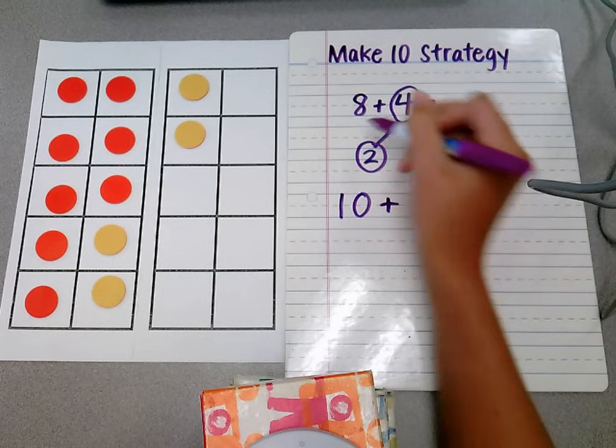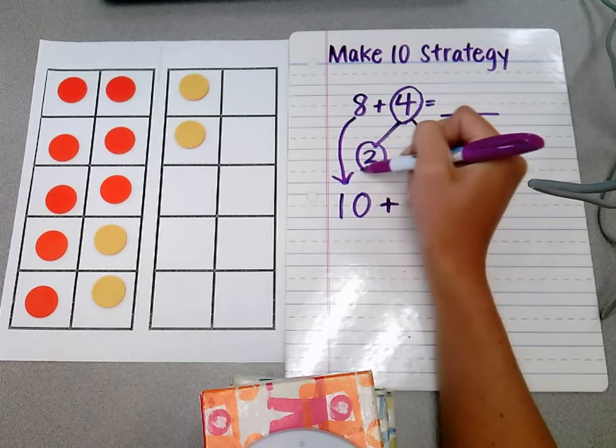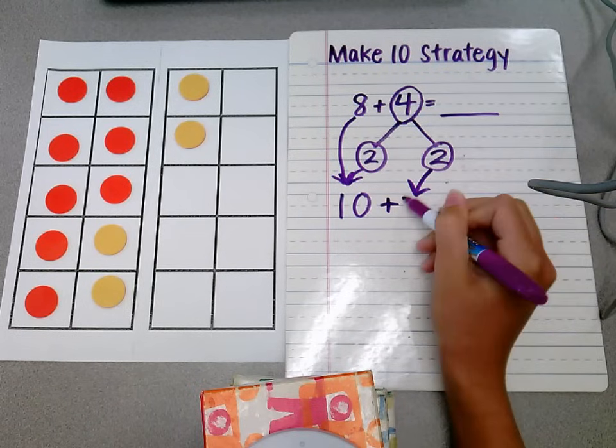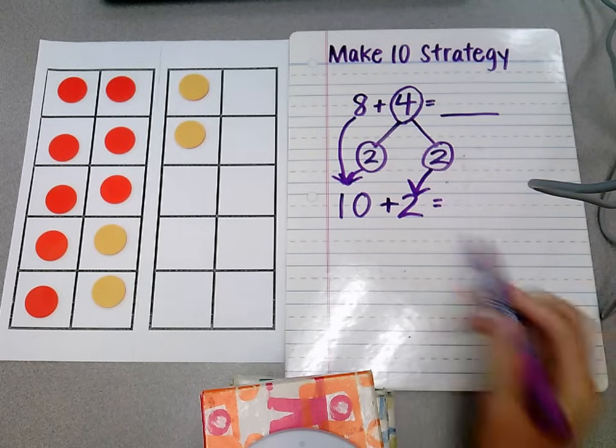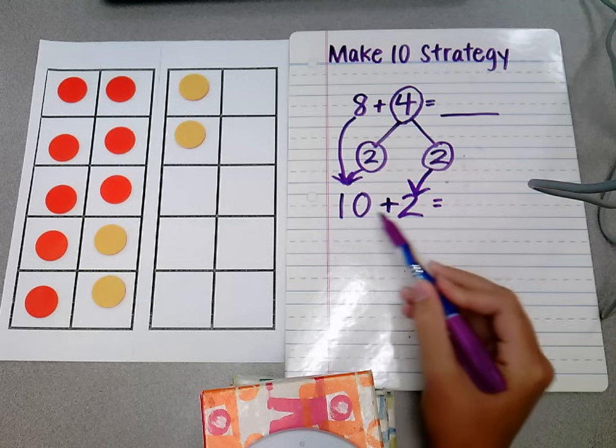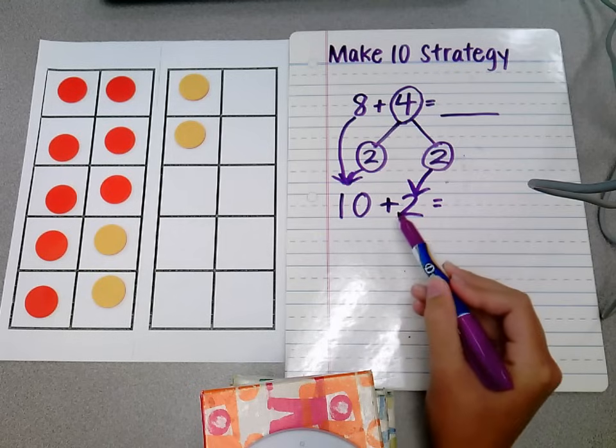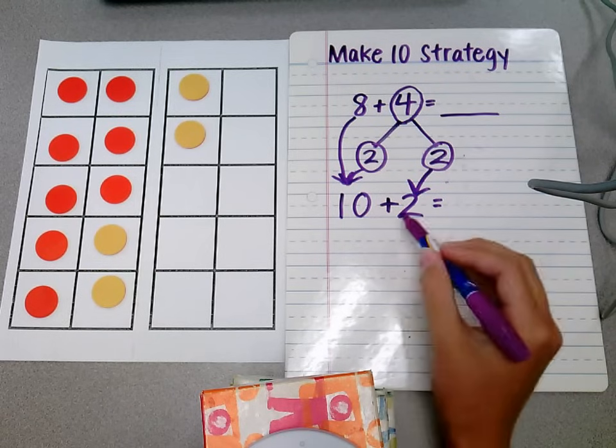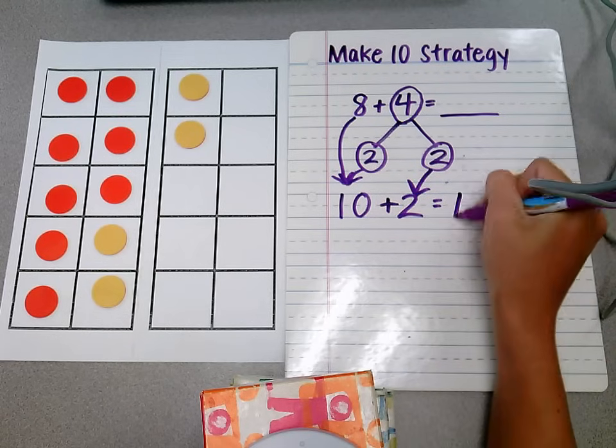Because now, we brought those two down, now we can bring over what's remaining, the 2, to create a much easier problem, a much easier number sentence. This number sentence is much easier for kids to see and instantly recognize the answer. 10 plus 2 equals 12.